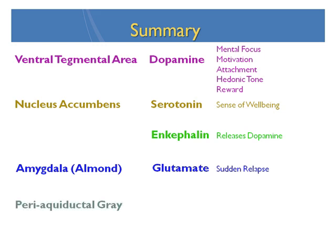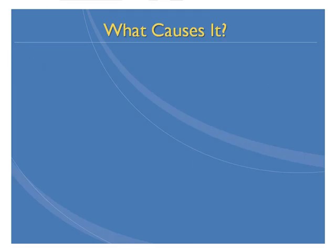So we now know three circuits in the brain: the withdrawal circuit, the compulsive use circuit, and the sudden relapse circuit. Together, these things make up the symptoms that are addiction. I hope I've convinced you that addiction is a real biological illness that resides in the brain, and that the problems of addiction aren't problems of the frontal cortex or the thinking part of the brain, but exist at much deeper levels where there is no conscious thought.